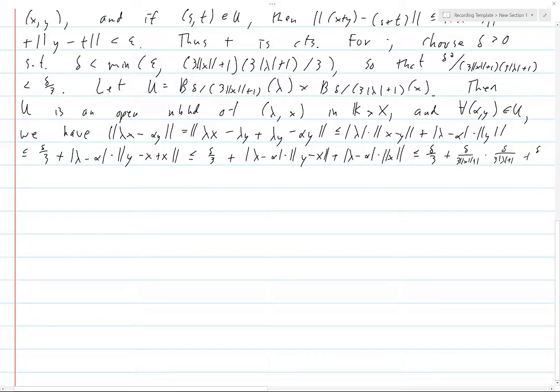And then we have this other term here, which is also less than delta over 3. And so now this is why we had to choose delta, because we have this delta squared over this product is less than delta over 3, which is exactly what we need here.